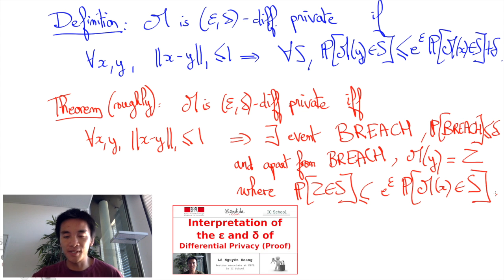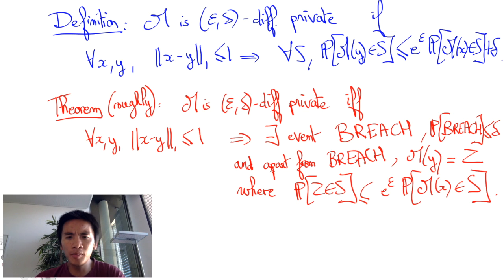But the takeaway is roughly the following: with high probability 1 minus delta, the probability of any result for database y is never more than a constant factor e to the epsilon times the probability of the result for database x.